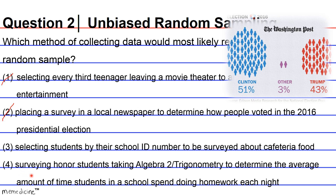Answer choice 4: this sample is limited to honors students, so it would not be representative of a whole student body. Even if you wanted data about honors students, not all honors students take Algebra 2 Trigonometry, so this still would not be a good sample. So 4 is a no as well.